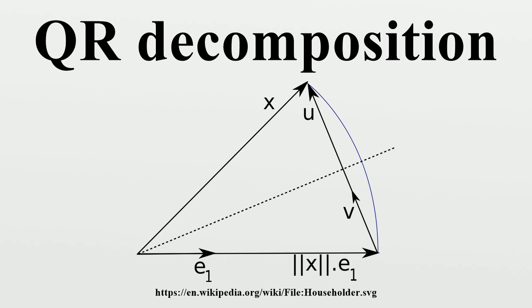Where R1 is an N times N upper triangular matrix, zero is an N times N zero matrix, Q1 is M times N, Q2 is M times M minus N, and Q1 and Q2 both have orthogonal columns.